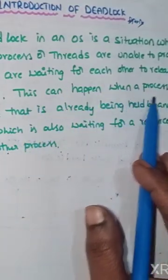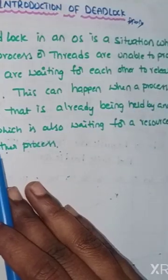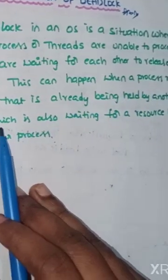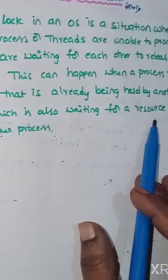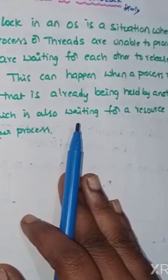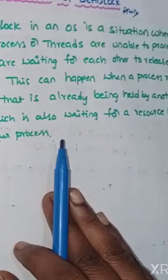This can happen when a process requests a resource that is already being held by another process, which is also waiting for a resource held by another process. In that situation, we have to face deadlock.